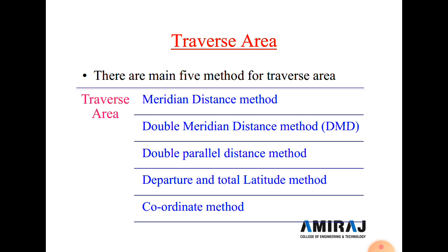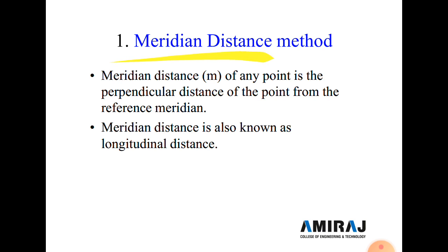Next topic is traverse area. There are five main methods: first, Meridian Distance Method (MDM); second, Double Meridian Distance Method (DMD); third, Double Parallel Distance Method (DPD); fourth, Departure and Total Latitude Method; and fifth, Coordinate Method. In the G2 examination, questions ask to analyze the types of traverse area methods and explain any one or two in detail, or they may be asked individually for three marks.